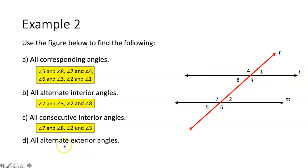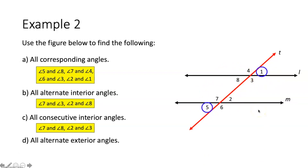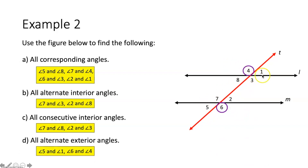Lastly, alternate exterior angles — opposite sides of the transversal and outside the two lines: angles 5 and 1 are alternate exterior angles, and angles 6 and 4 are also alternate exterior angles.